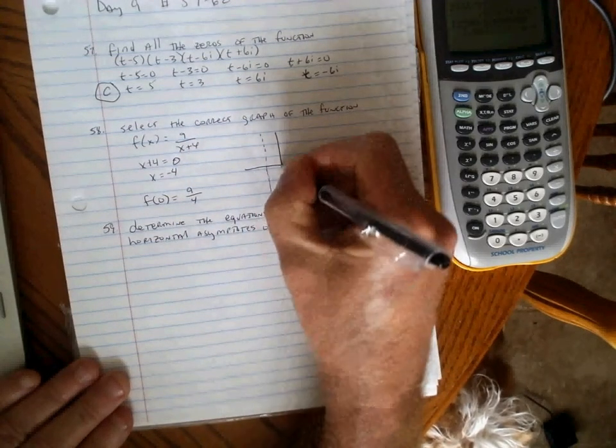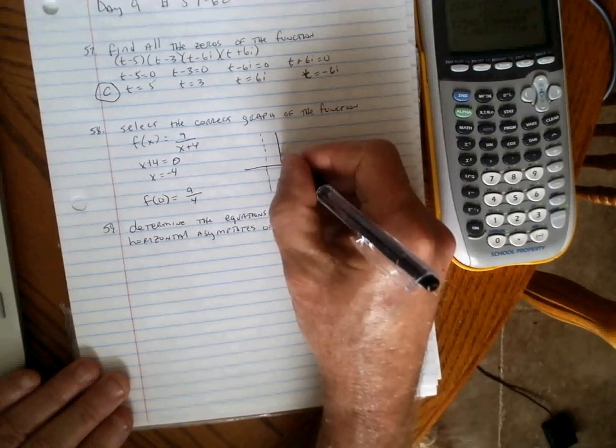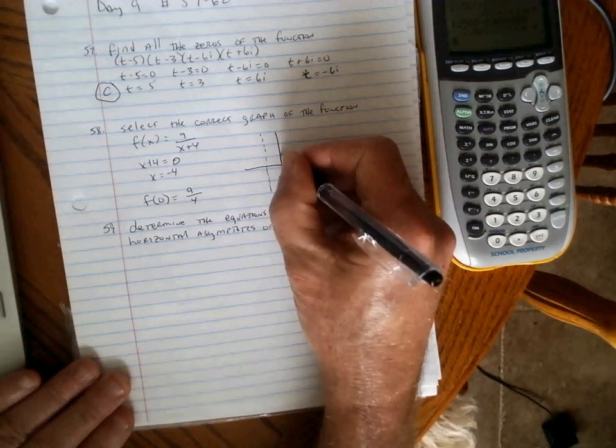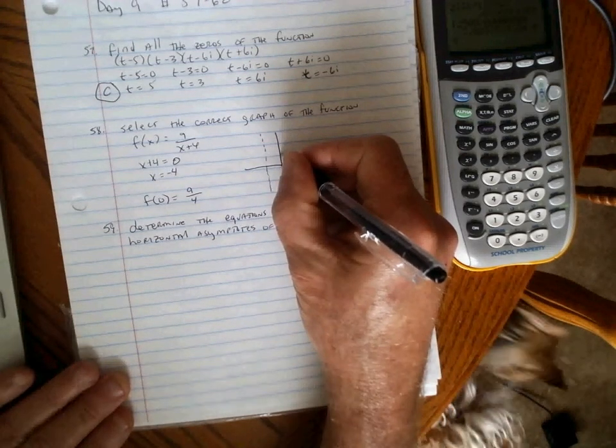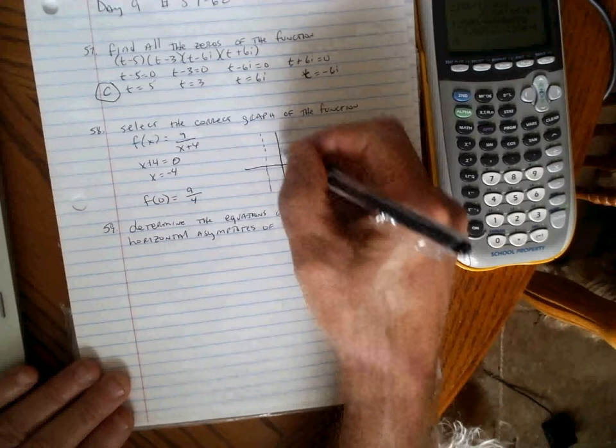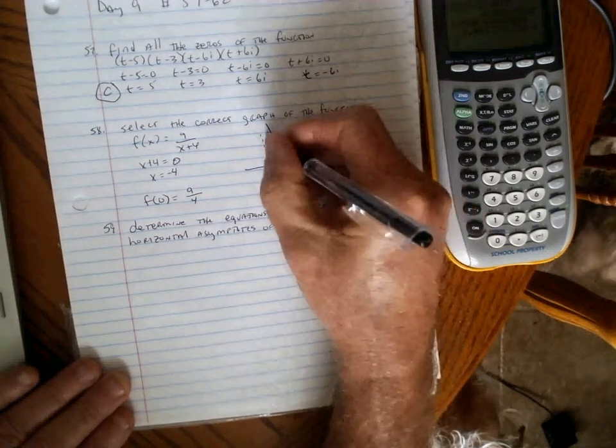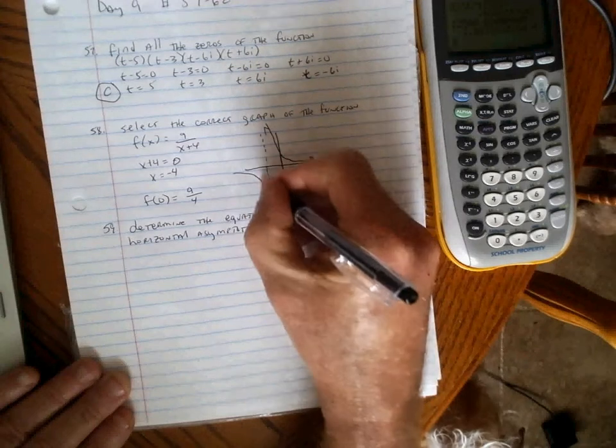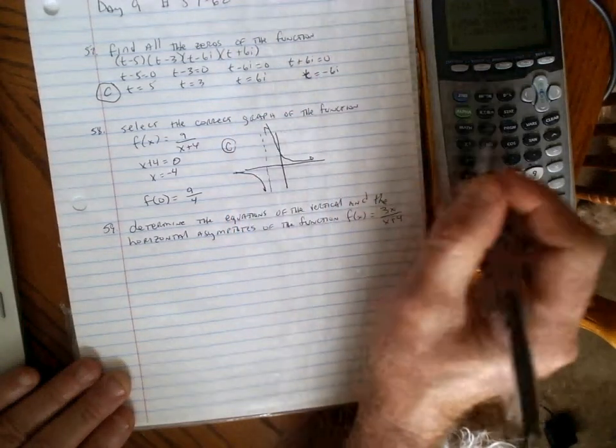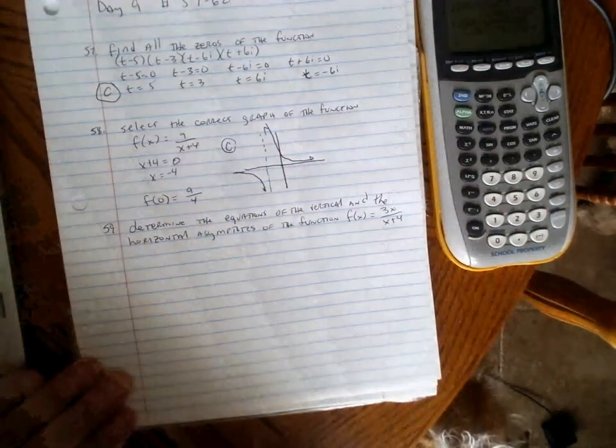So when x is 0, nine-fourths is going to be up here on the graph. We can tell that's got to be answer C because the graph comes down like this. You could also graph it on your calculator or computer.